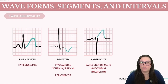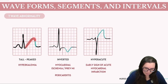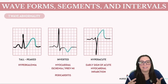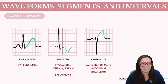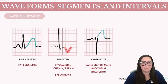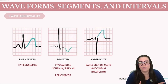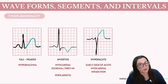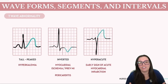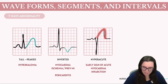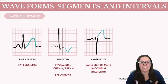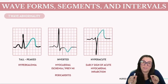T wave deviations can be tall, inverted, or hyperacute. Tall or peaked T waves most likely indicate hyperkalemia — elevated potassium levels that could affect cardiac conduction. Inverted T waves can sometimes be a normal variant, but may also signify myocardial ischemia, previous myocardial infarction, or pericarditis, reflecting changes in myocardial repolarization. Hyperacute T waves — really high and peaked with a broad base — may be early indicators of an acute myocardial infarction, signaling the initial stages of cardiac injury.